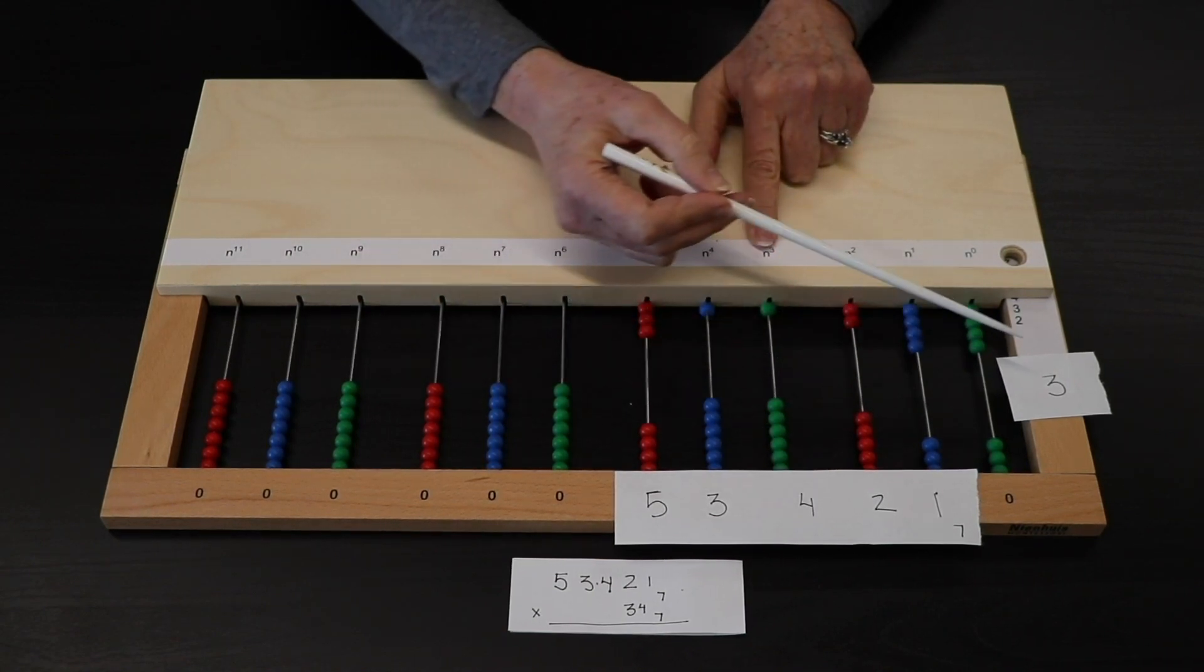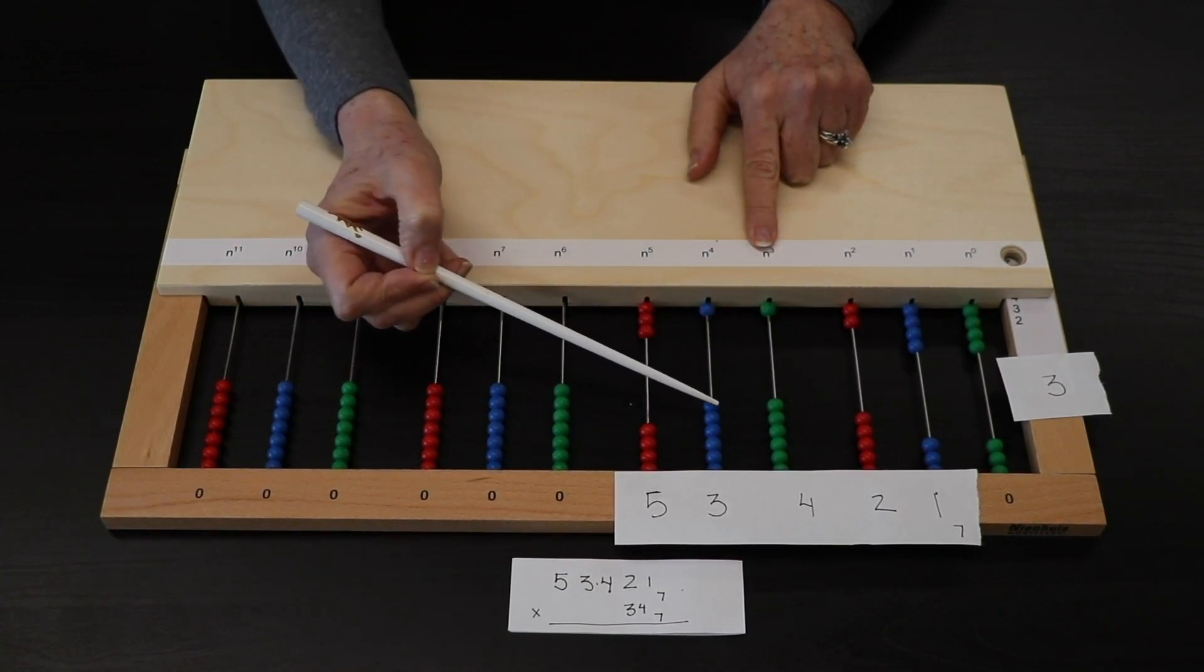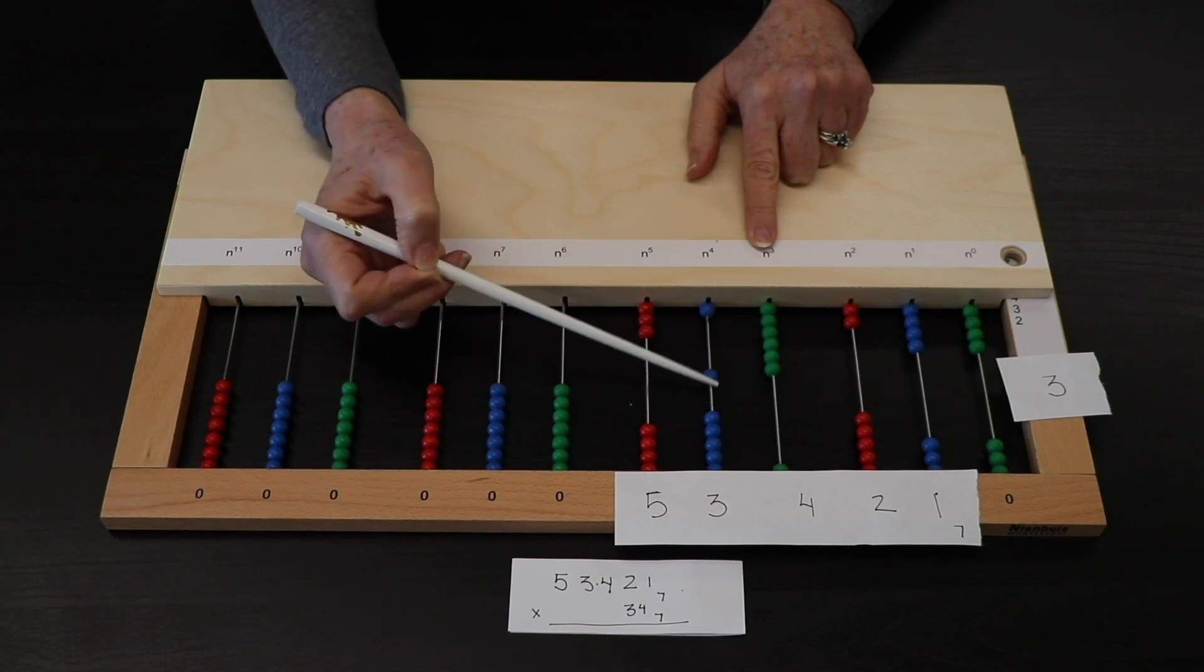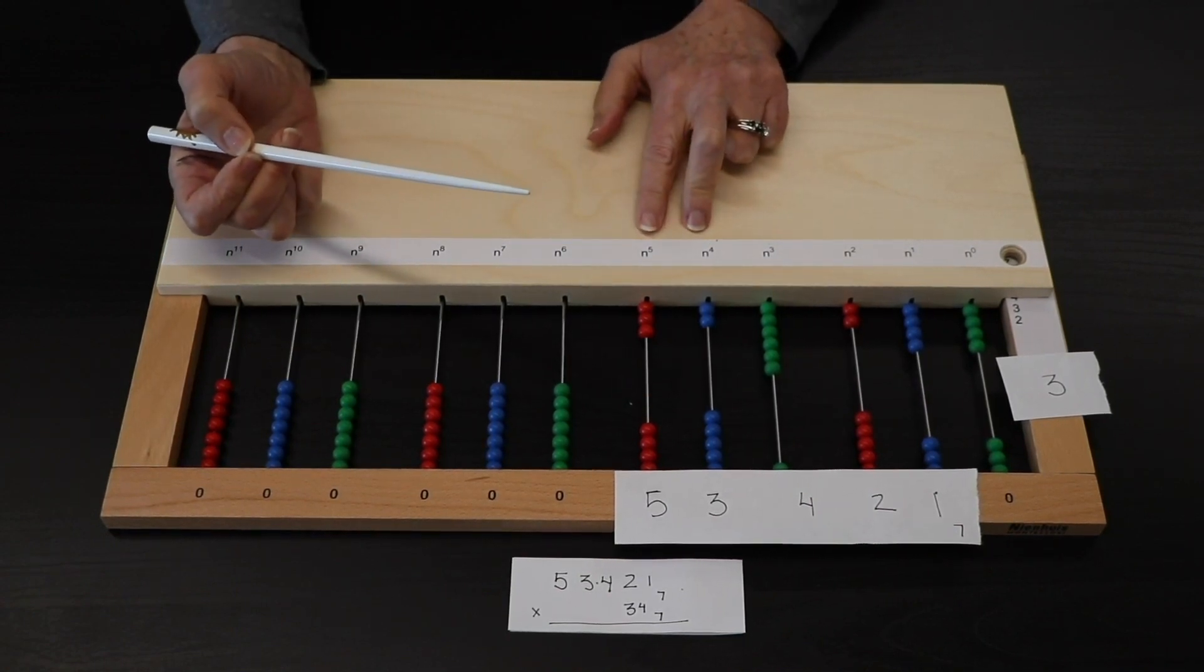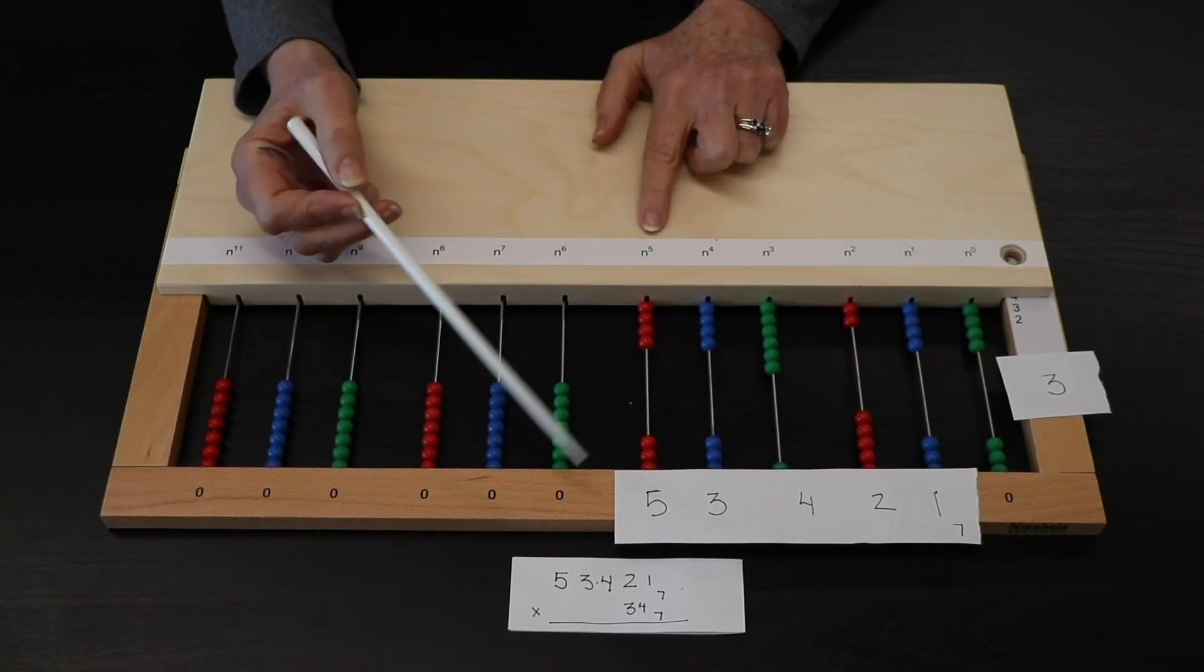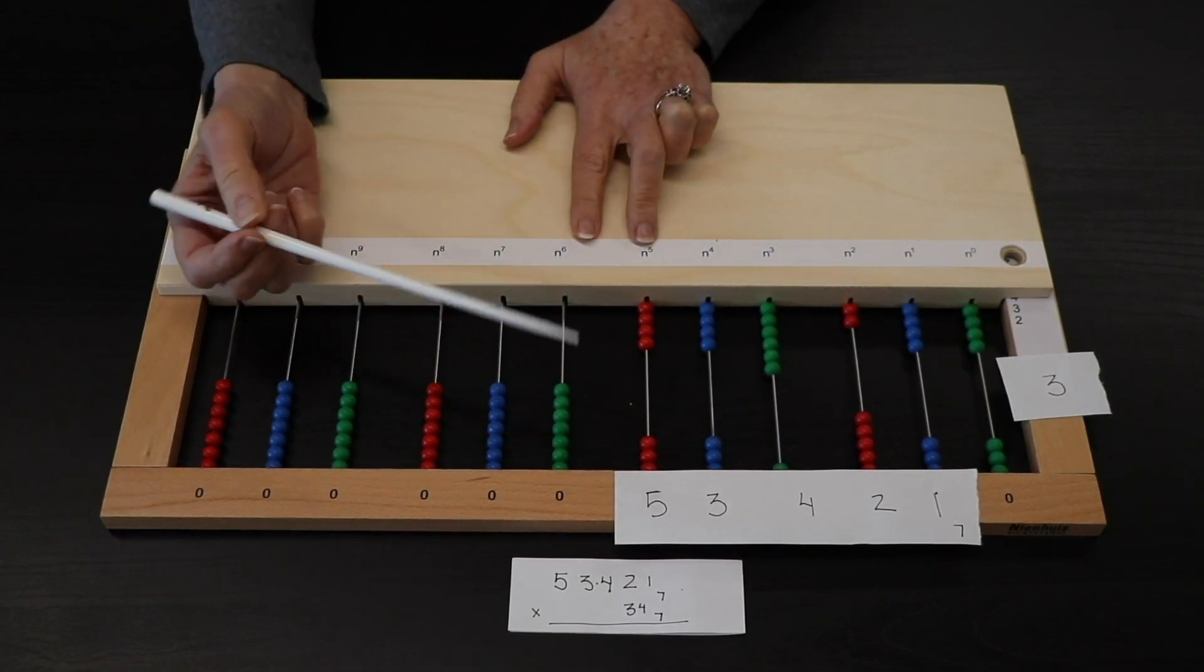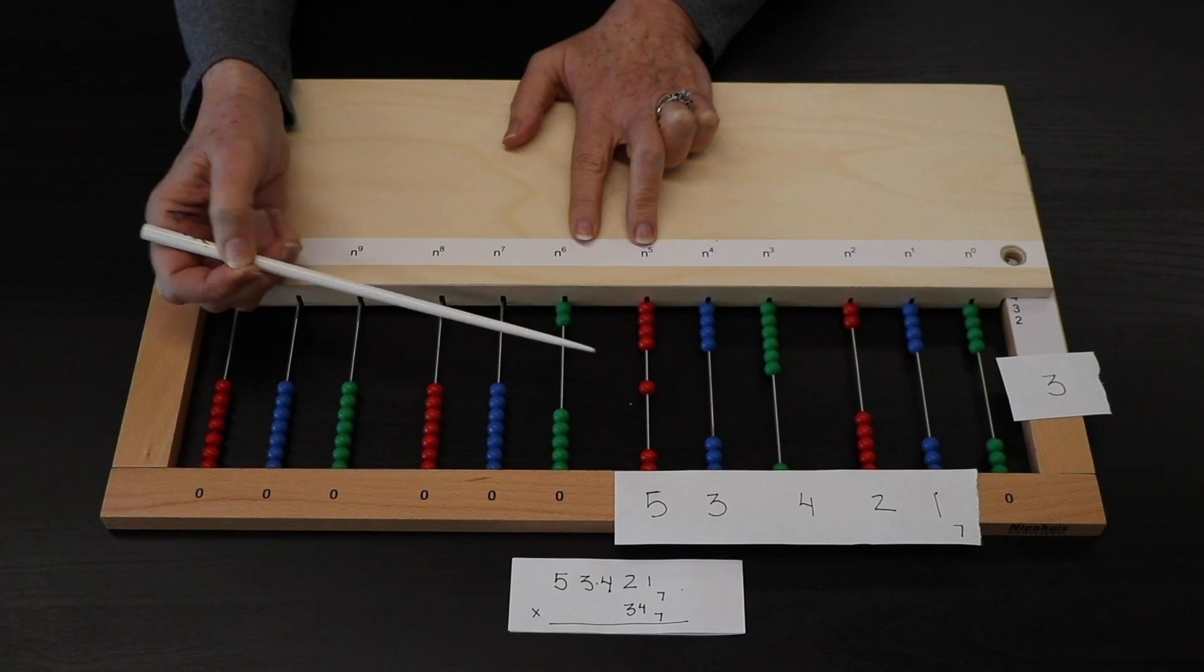4 times 3 is 12. 12 in base 7 is 1, 5. 3 times 3 is 9. 9 in base 7 is 1, 2. 5 times 3 is 15. 15 in base 7 is 2, 1.